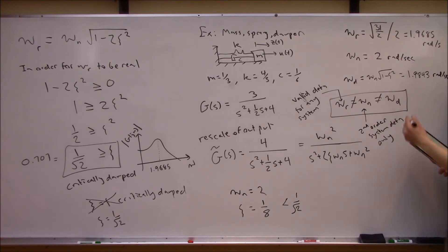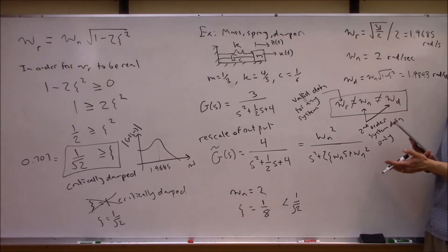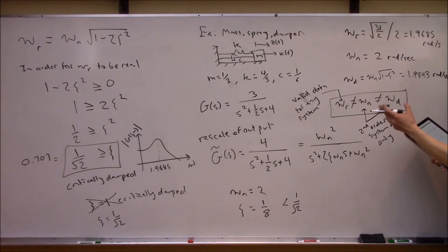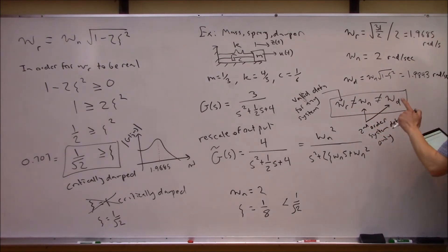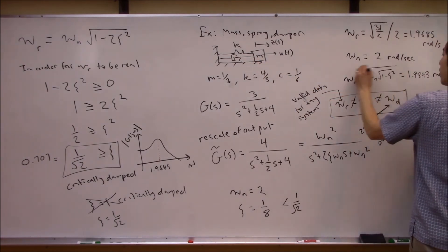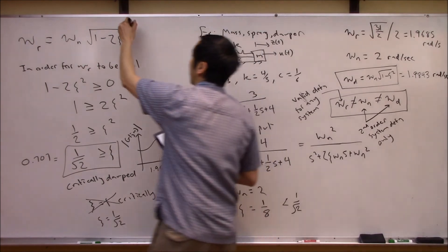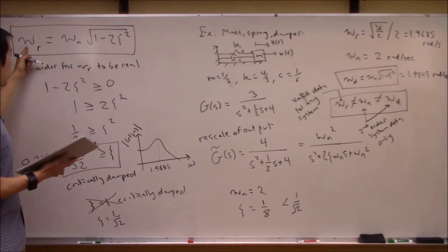For higher-order systems, what do you call the natural frequency? You might talk about dominant poles, but there are contributions from other poles as well. Similarly, the damped natural frequency is also a second-order construct — higher-order systems can oscillate at many different frequencies. So it's a bit apples and oranges.